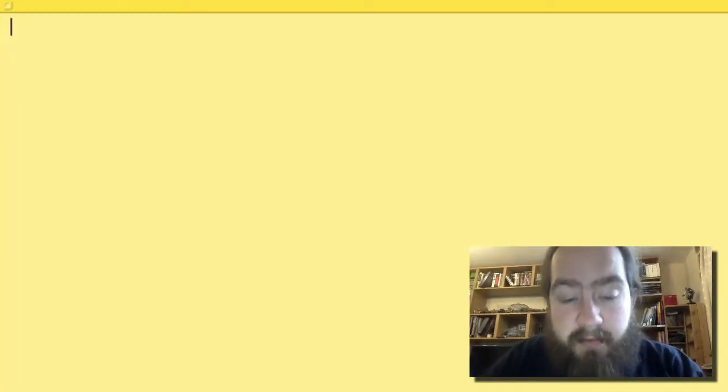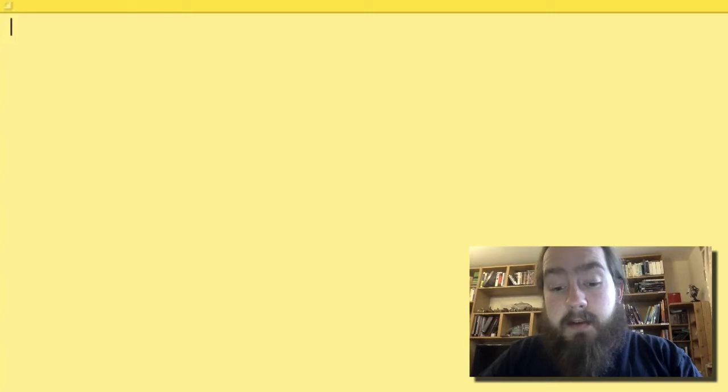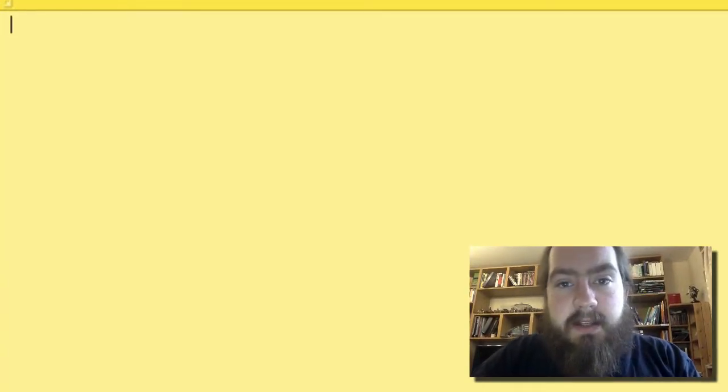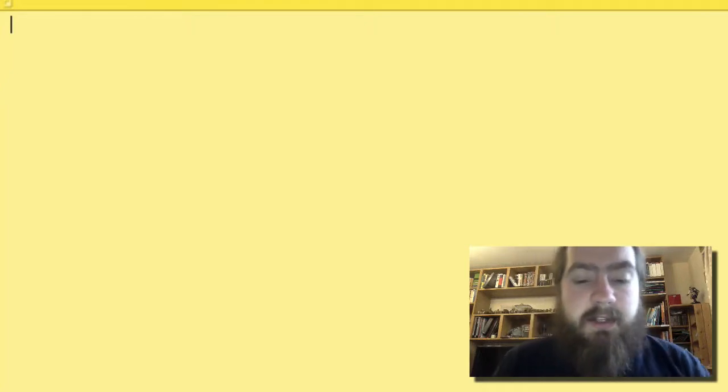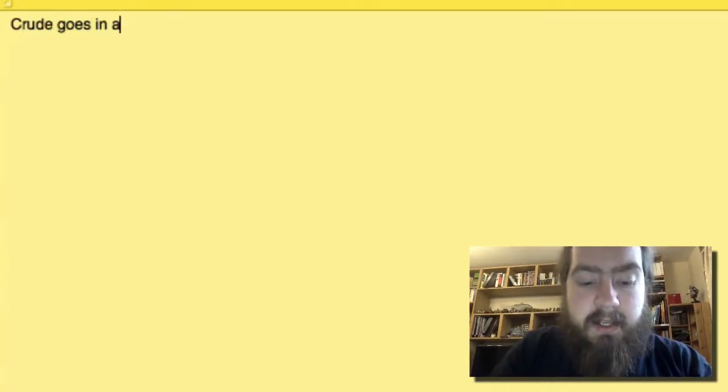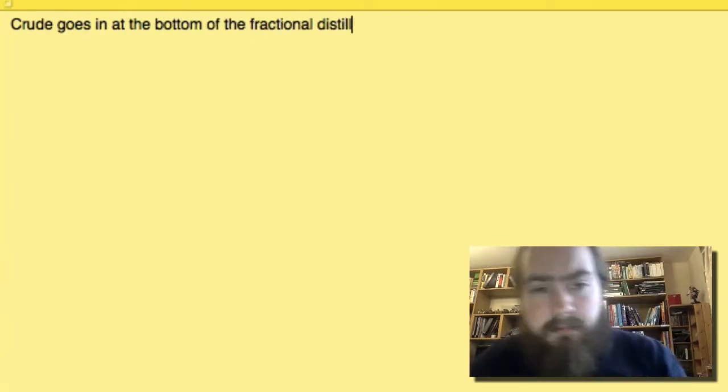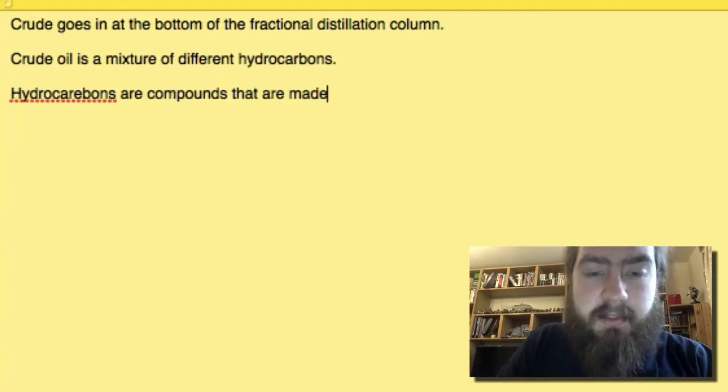Now you could do this on the back of your paper or you could do it at the side of the question in case you missed anything else in your final answer. So we're looking at things that we can use to explain how petrol is separated from the mixture of hydrocarbons in crude oil. The first things that happened is the crude oil goes in at the bottom of the fractional distillation column. Crude oil is a mixture of different hydrocarbons.